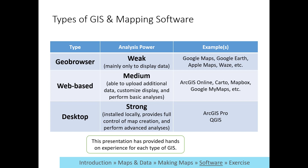Carto is licensed for MIT use and is free to use if you are affiliated with MIT, but charges a fee otherwise. ArcGIS Online has both a free public version and a paid version with additional features that MIT affiliates can access.